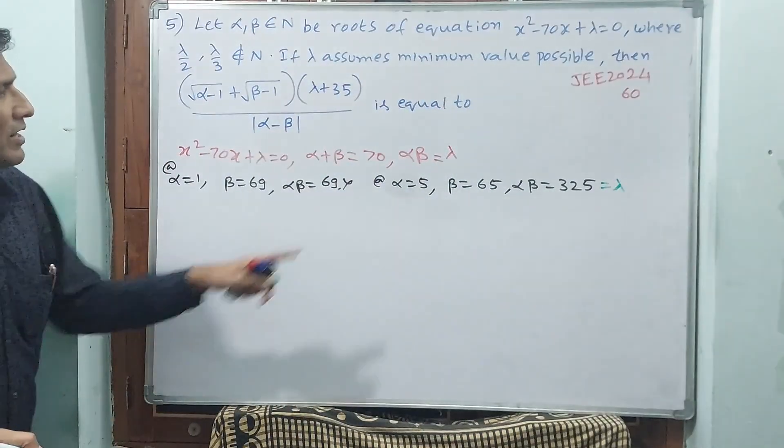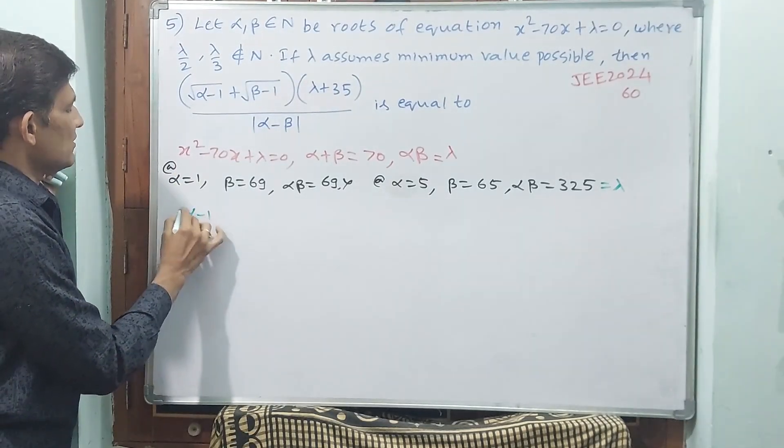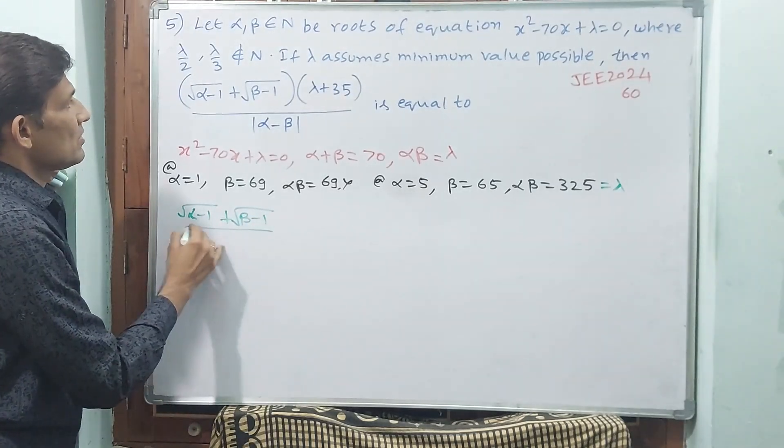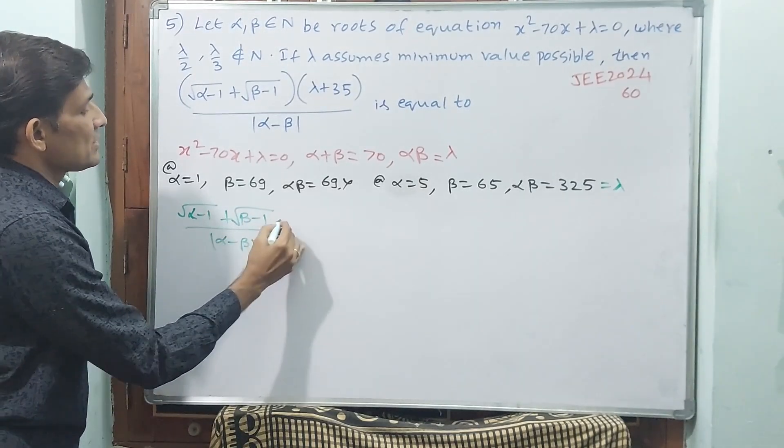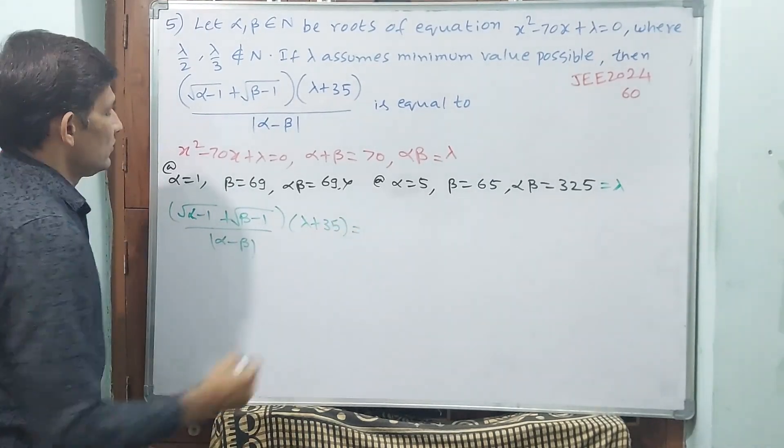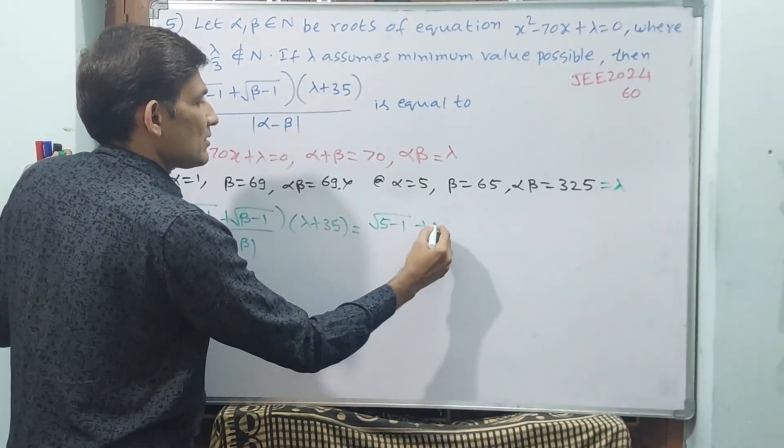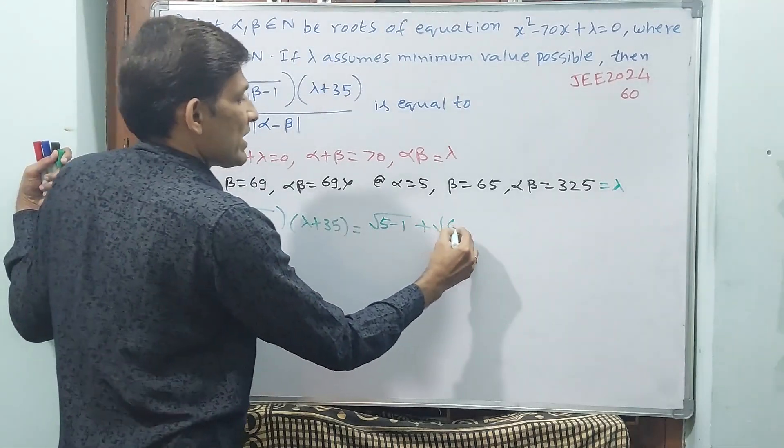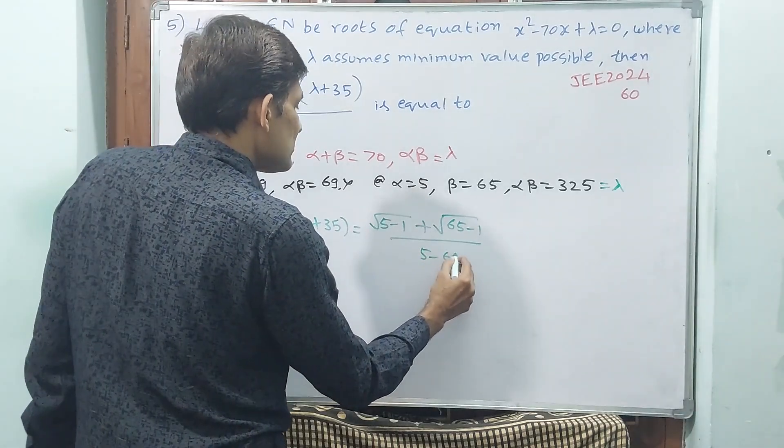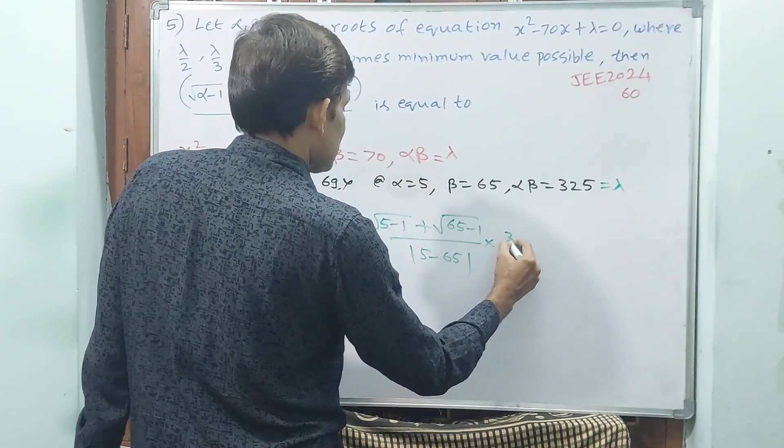Now you have got α, β, and λ. Now you proceed here: (√(α-1) + √(β-1)) / |α-β| × (λ + 35) equals... See, 5 - 1 = 4, 65 - 1 = 64, 5 - 65 in modulus, 325 + 35.